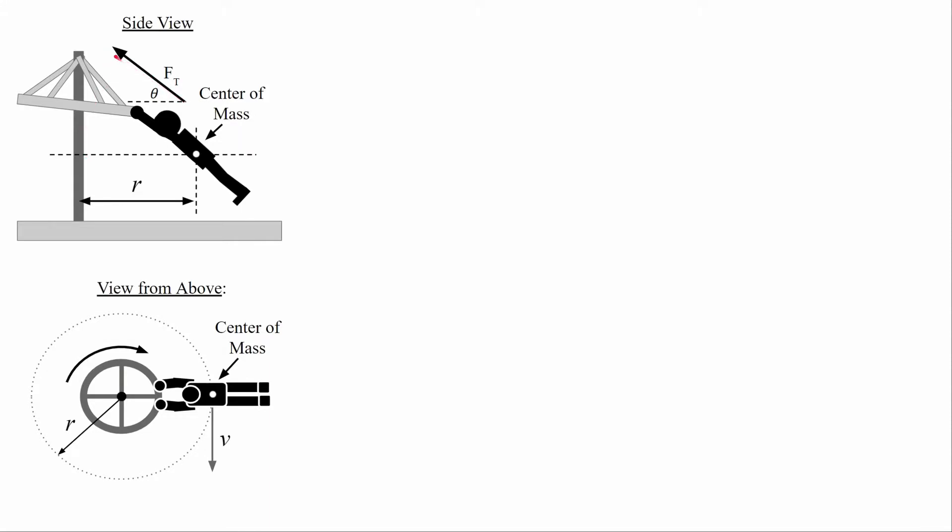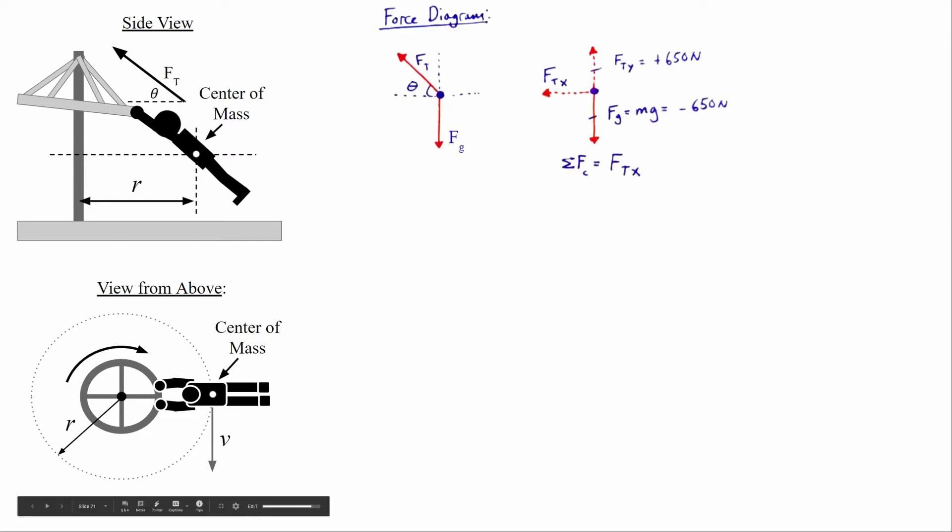If we want to figure out the combined tension force in my arms at angle theta above the horizontal, let's first make a force diagram. The only significant forces on me are the gravitational force of the earth pulling down, and the tension in my arms up at angle theta. If I'm moving in a horizontal circular path, I'm not accelerating vertically at all, so any components of forces in the y-direction must be balanced. The x component of tension is always pointed towards the center of the circular path — centripetally.